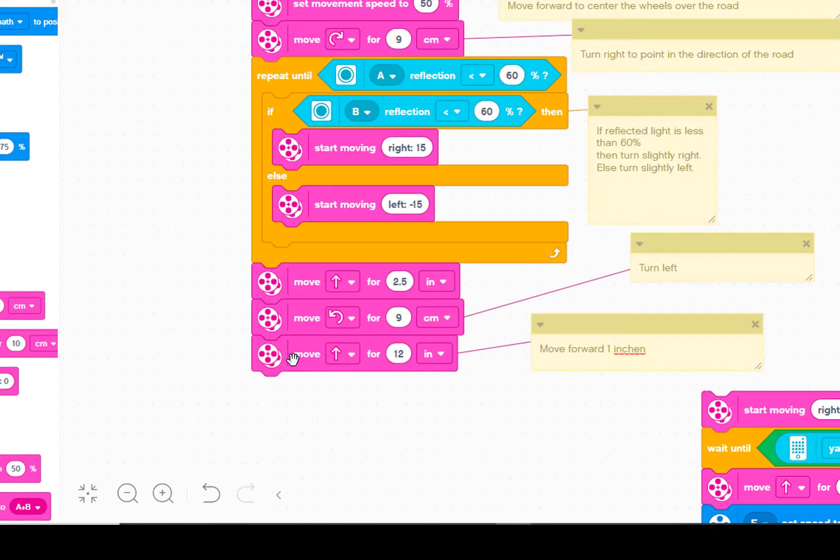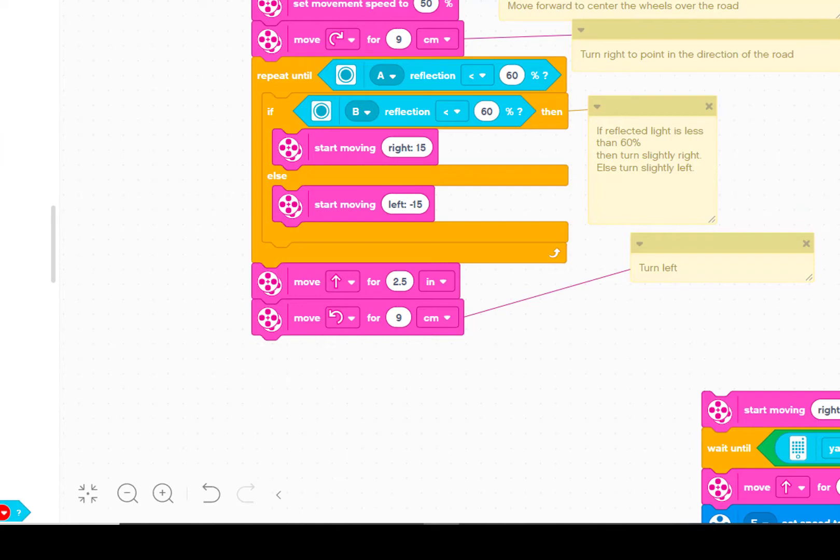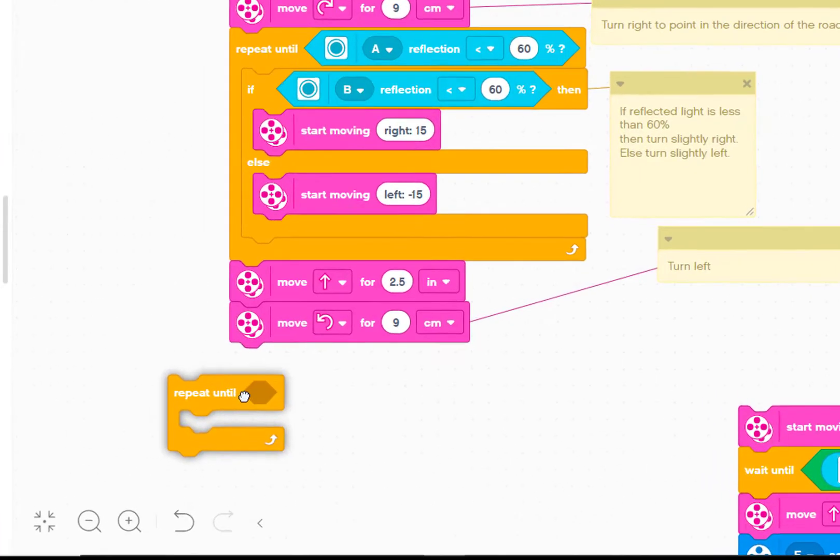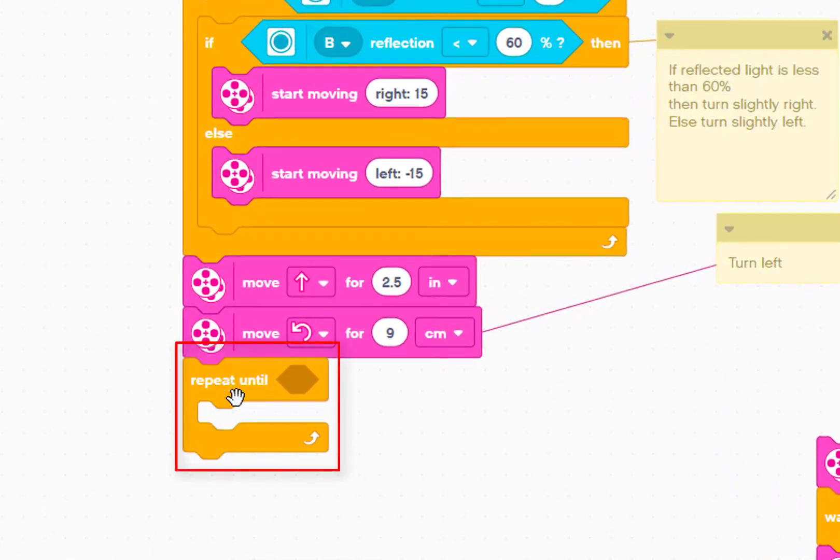Let's start by taking out the block that moves Chariot 12 inches to yellow's location. Like we did for the first part of the road, we'll use a repeat until block, but what should we use for the until condition?